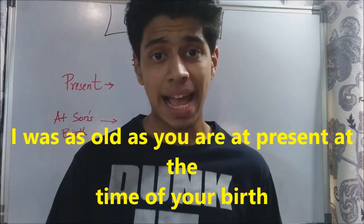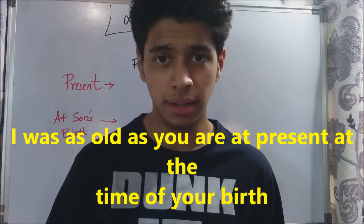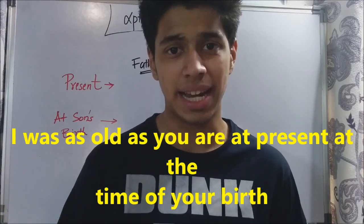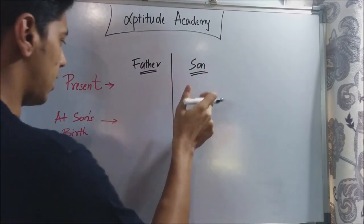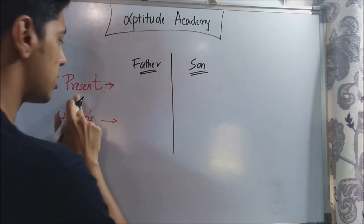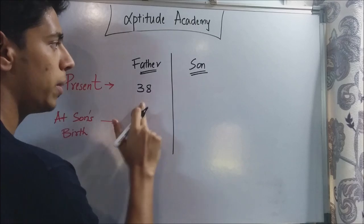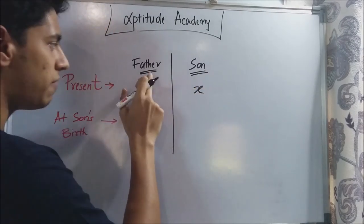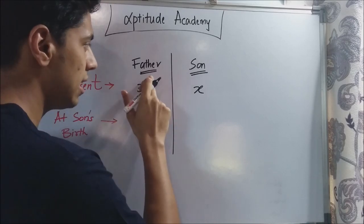The statement 'I was as old as you are at present at the time of your birth' seems very confusing, but let's try to understand it. We know the present age of the father is 38. We don't know the son's age — let's keep it as x.